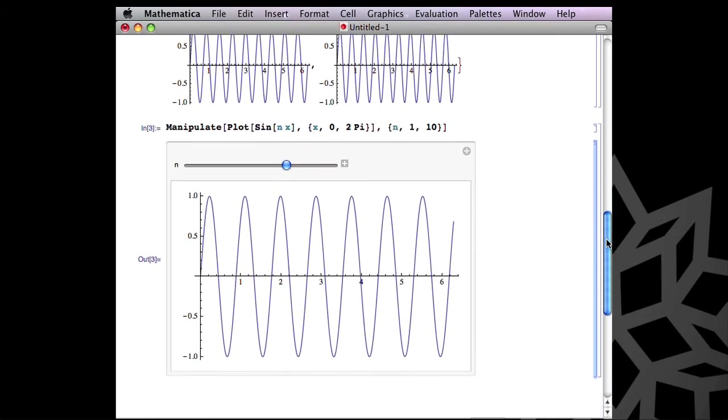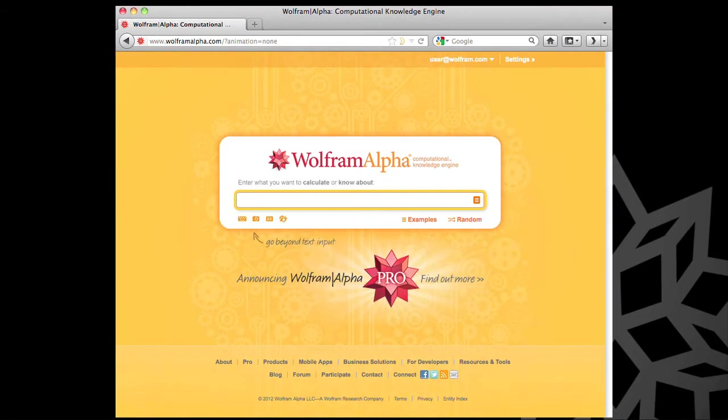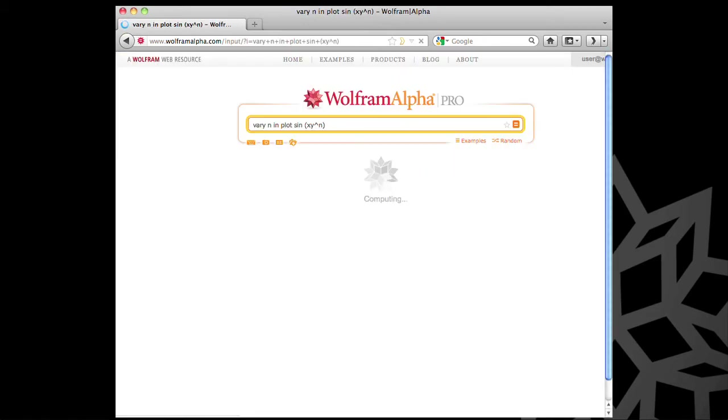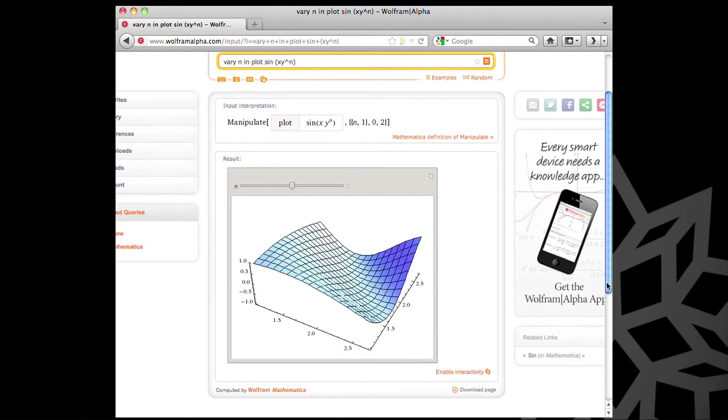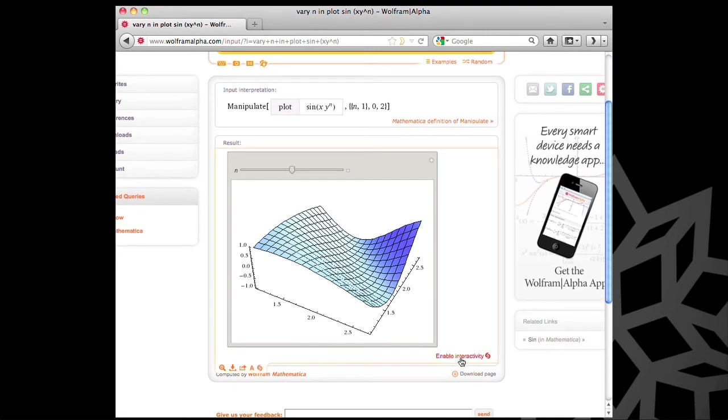And you can actually get even easier than that if you go to the Wolfram Alpha website. So I'm logged in here as Wolfram Alpha Pro subscription, and let me show you how I can create a similar but actually even more interesting interactive that way. So I'm going to say vary n in the plot of sine of xy to the n power. And you notice I have not used anything like the Mathematica syntax. We have no space between the x and the y. This is using the Wolfram Alpha natural language processing system to figure out what it was that I actually meant. And let me turn on interactivity here.